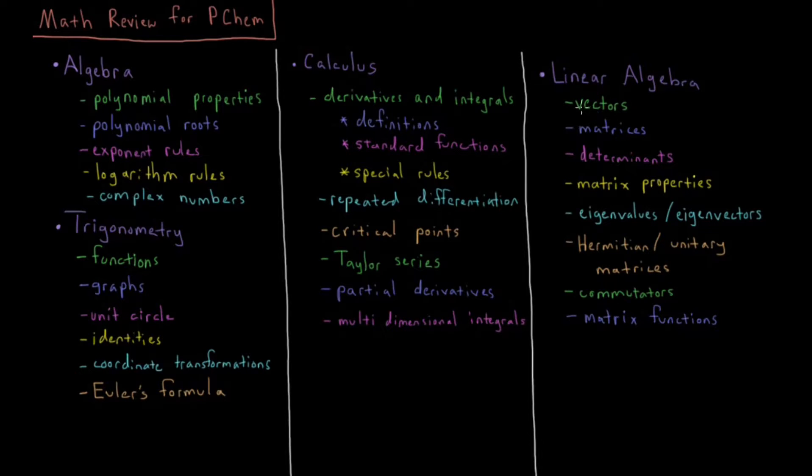So that will include things like vectors, matrices, determinants, those first three being pretty useful and helpful if you're taking undergrad PCHEM. Then we move into more of the advanced topics of matrix properties, eigenvalues and eigenvectors of matrices, Hermitian and unitary matrices, unitary transformations, matrix diagonalizations, those types of things. Matrix commutators and functions of matrices as well.